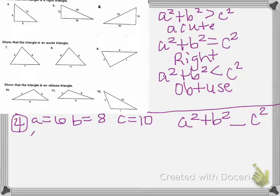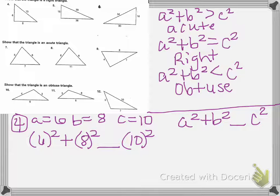We're going to plug those in. So A is 6, B is 8, and C is 10. So 6 squared is 36, plus 8 squared is 64, 10 squared is 100.